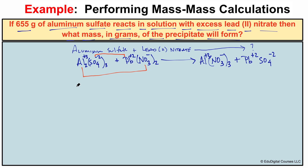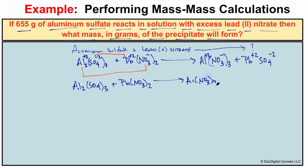Our chemical reaction equation without ionic charges looks like this: Al₂(SO₄)₃ + Pb(NO₃)₂ → Al(NO₃)₃ + PbSO₄. This is our unbalanced chemical equation.